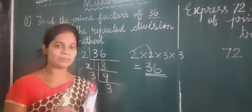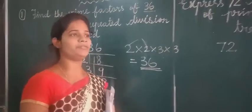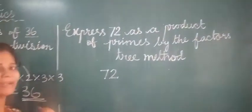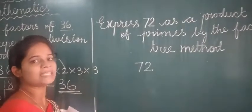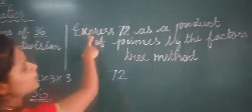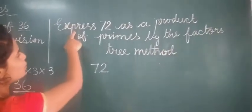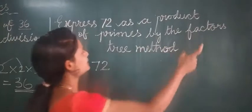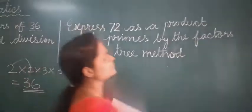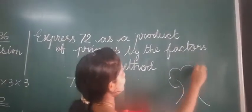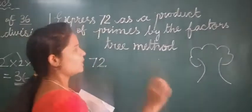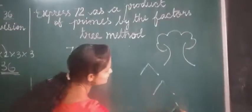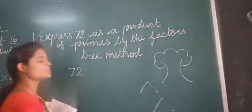This is one kind of repeated division method. And another one, if you see, the next one. This is already there in your textbook itself, but I am explaining you again, so that you will understand better. Read along with me, the question written on the board. Express 72 as a product of primes by the factors tree method. What is the shape of the tree? The tree is like that, right? When we use tree method, the method will go like this, like the T shape. Yes or no? So, this method is called tree method.